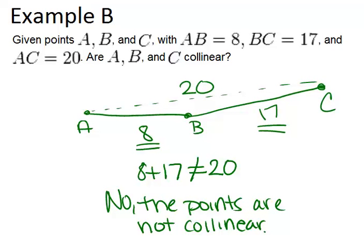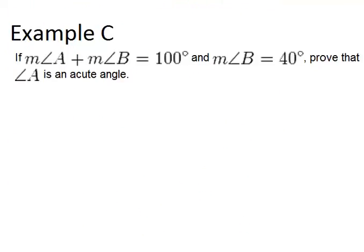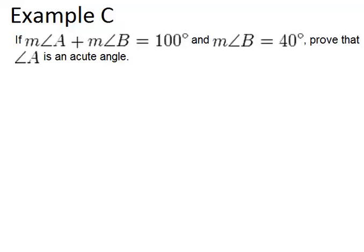Finally, let's look at our last example, example C. So let's start with what we know, that the measure of angle A plus the measure of angle B equals 100 degrees. We know that. That's a given fact. So that's our reason for that.